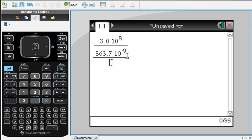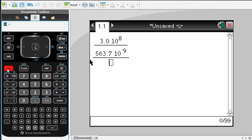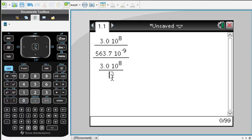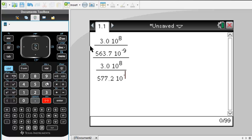Okay. And then we are going to divide that by f_s, which was 3.0 times 10 to the 8th meters divided by 577.2 times 10 to the negative 9th. Okay.